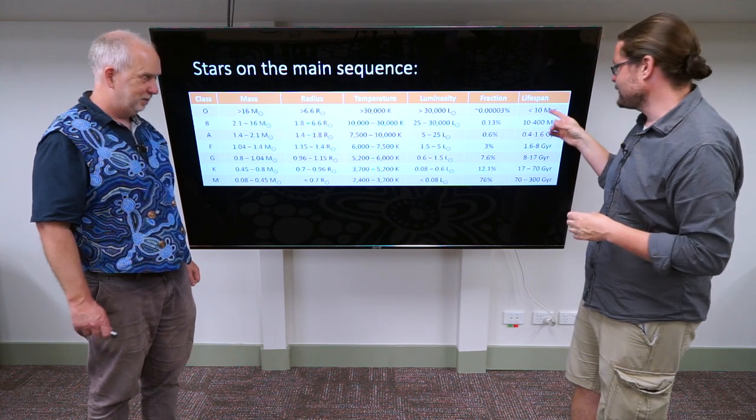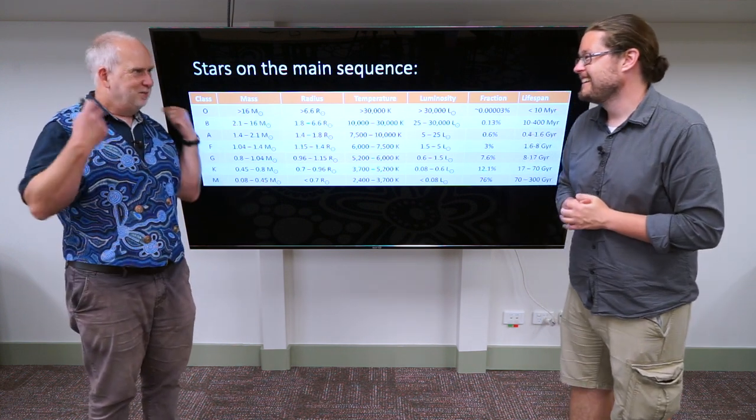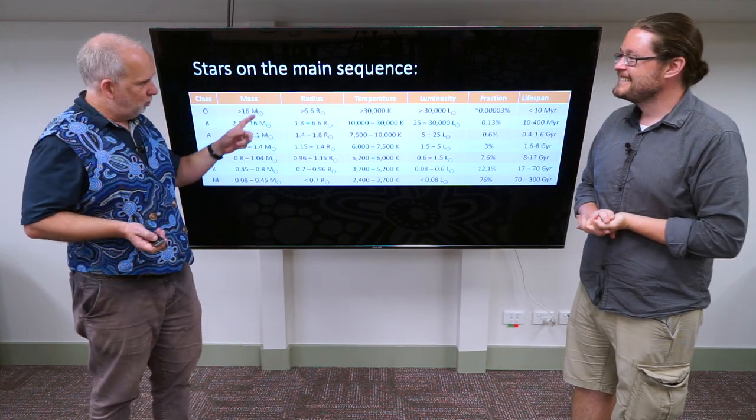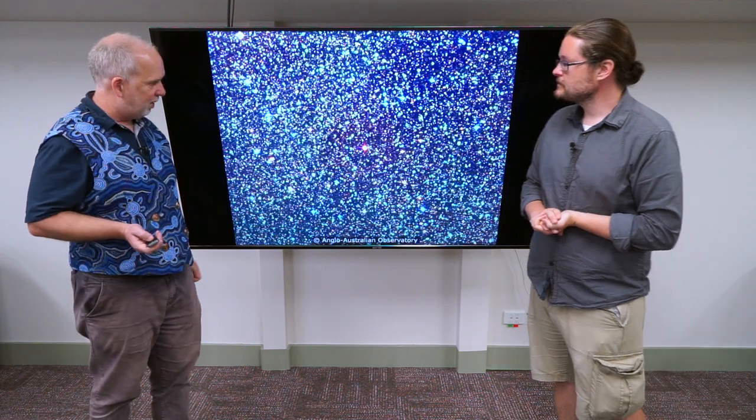So we really almost don't see these things ending. Every one of these stars that's ever been born is still around. Whereas these O stars, they're gone. They're like rock stars. They live furiously and they die young.